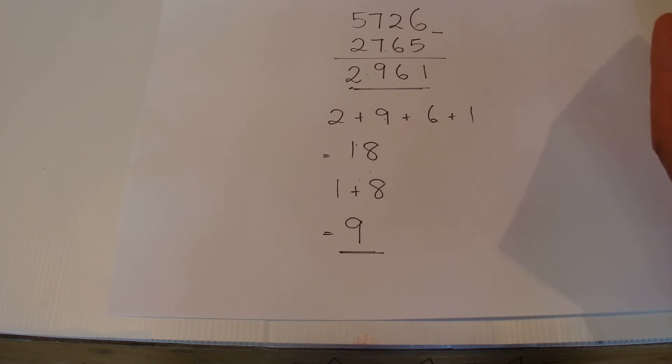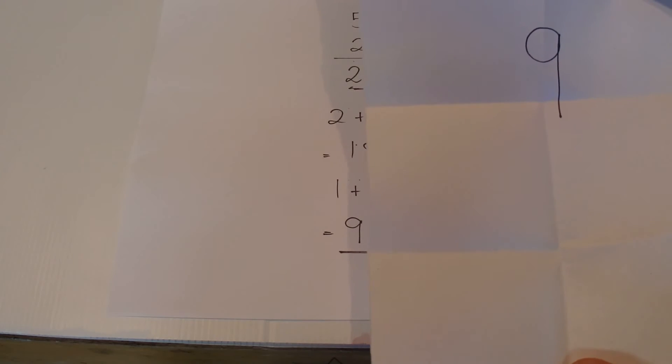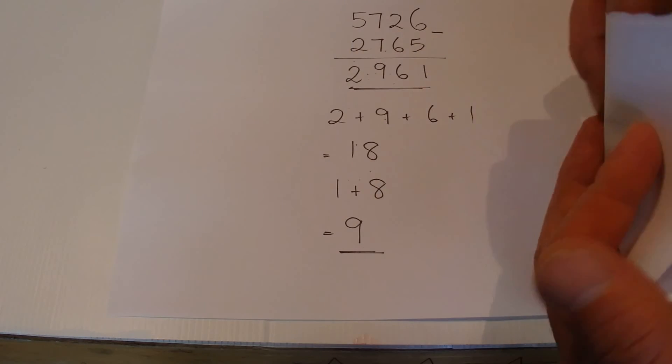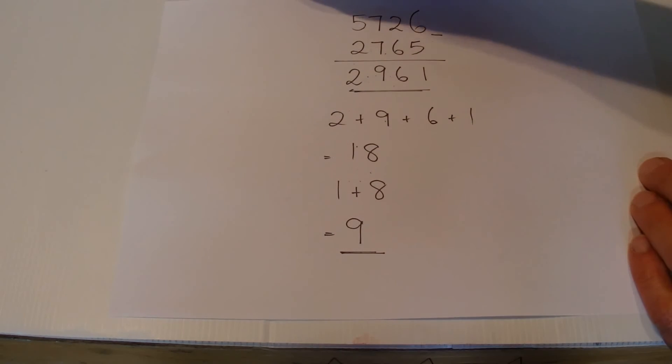Now to make this a little bit more interesting, you may want to secretly write 9 on a piece of paper beforehand, fold that up and hand that to your friend—don't let them open it yet.